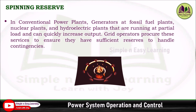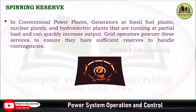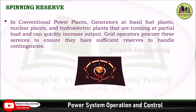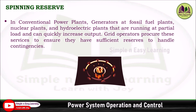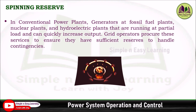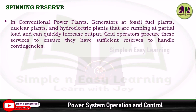In conventional power plants — generators at fossil fuel plants, nuclear plants, and hydroelectric power plants — that are running at partial load can quickly increase output. Grid operators procure these spinning reserve services to ensure they have sufficient reserves to handle contingencies.